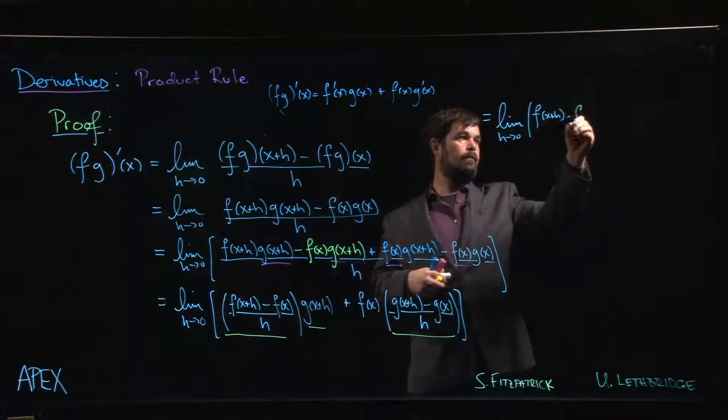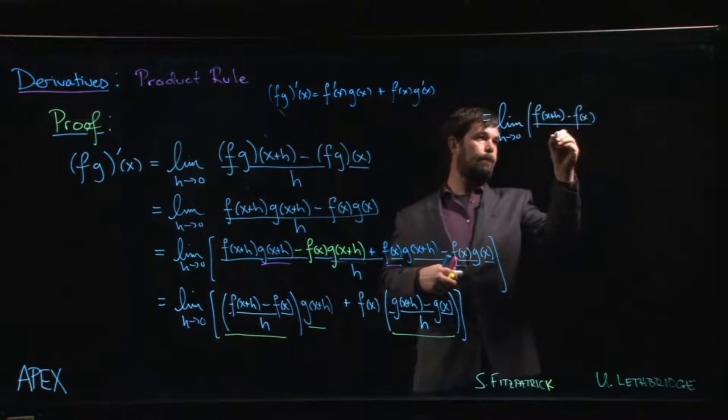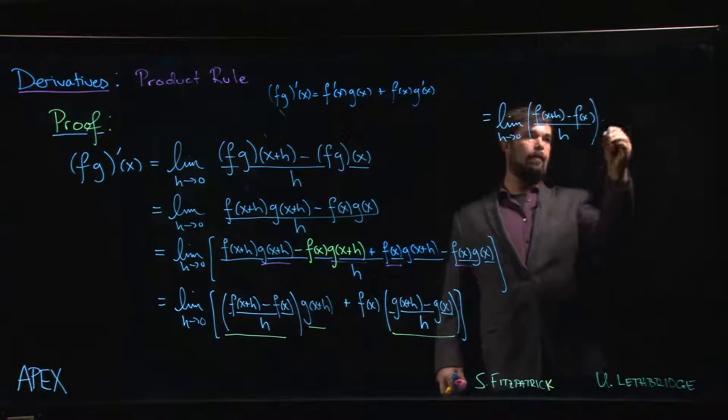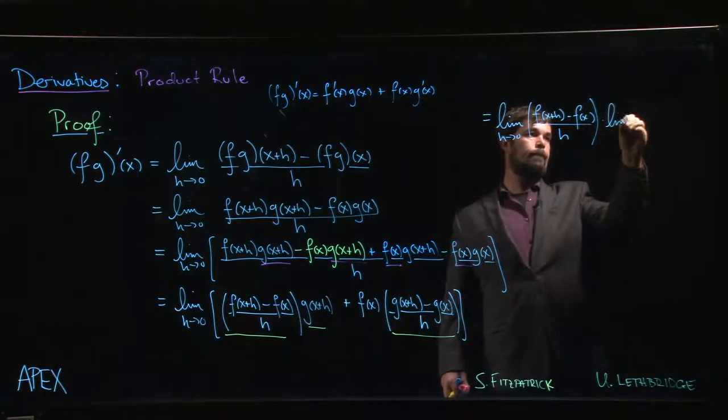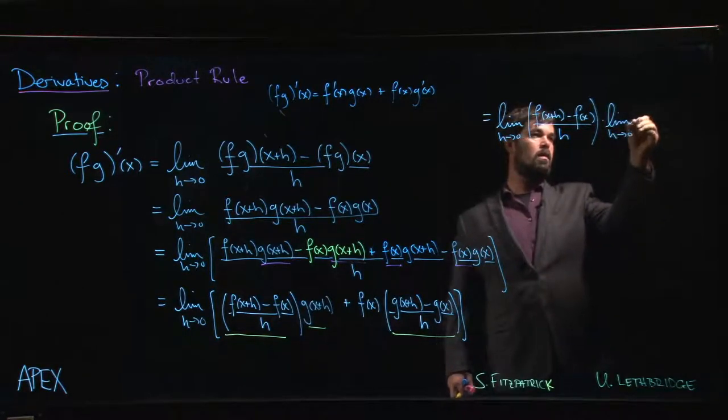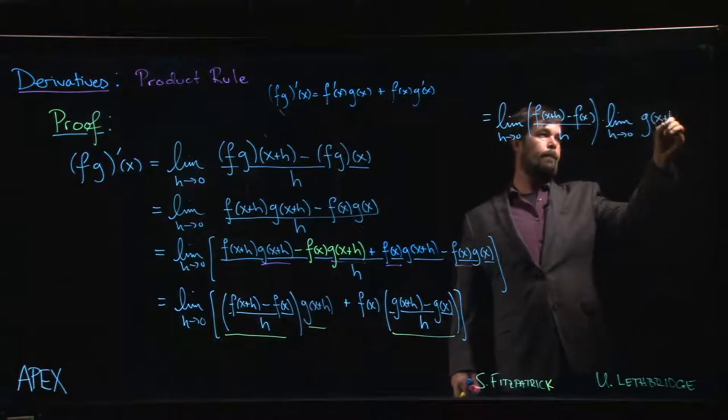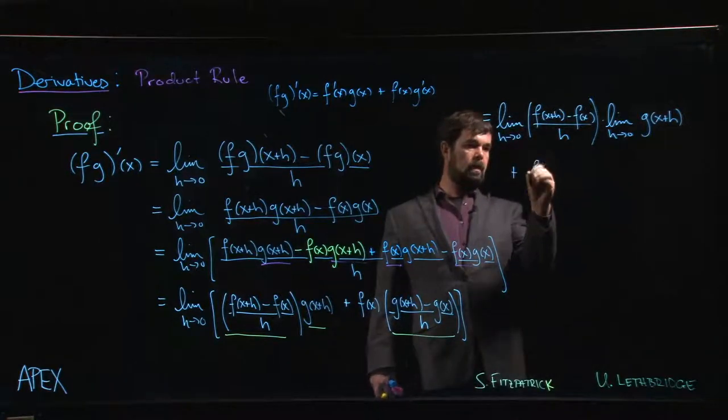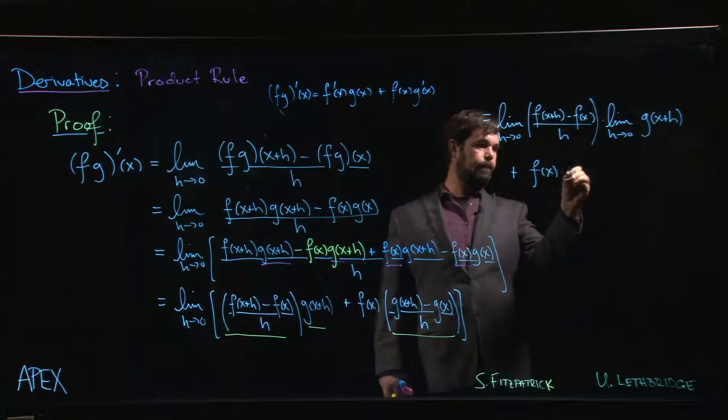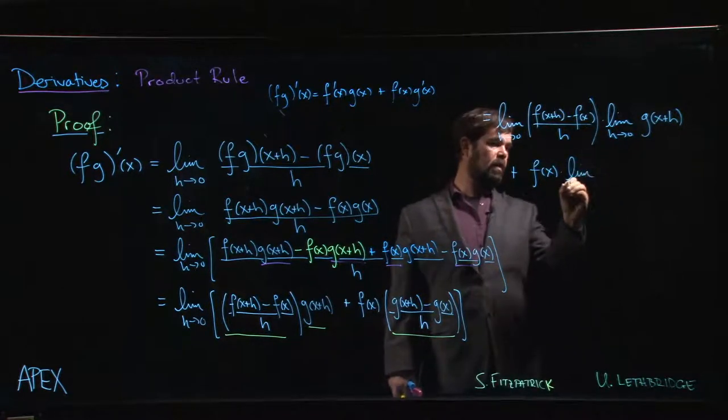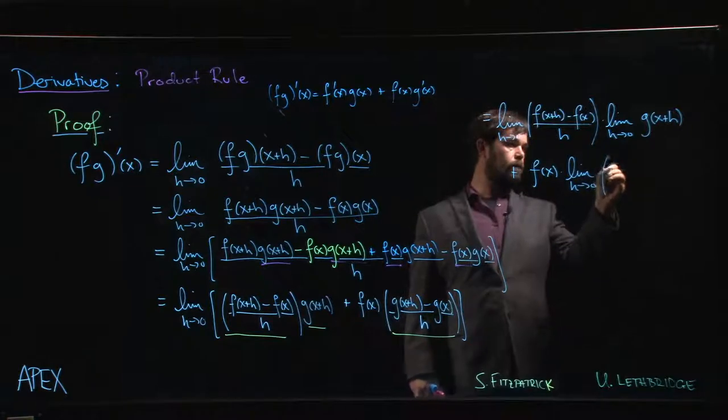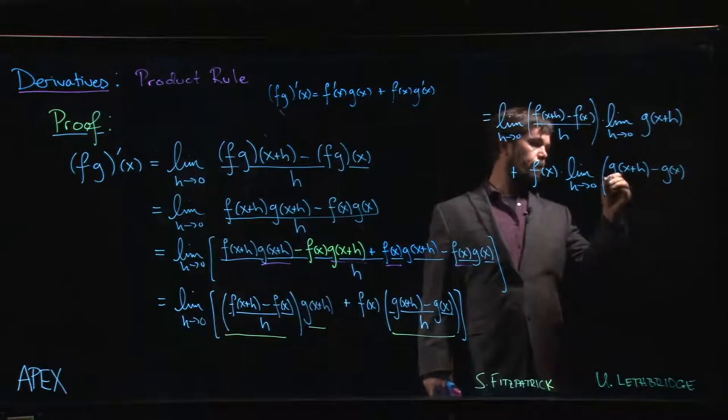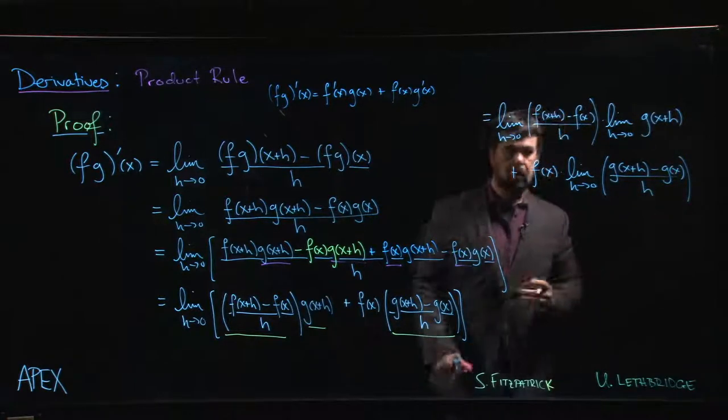We have the limit h going to zero of f of x plus h minus f of x over h, and the limit of a product is product of the limits, times limit h going to zero g of x plus h. Plus now f of x I can just bring out, it's a constant as far as the limit with respect to h is concerned.